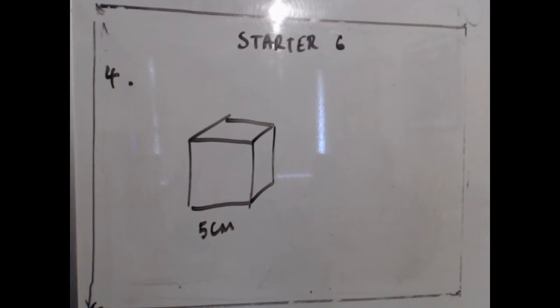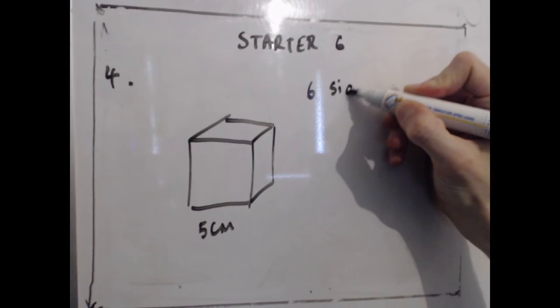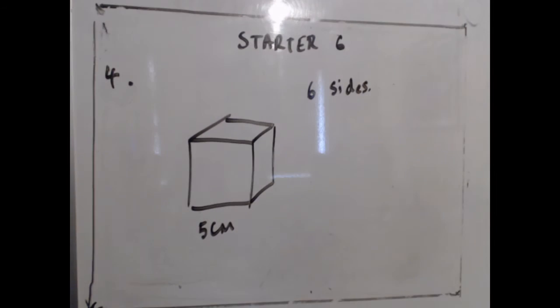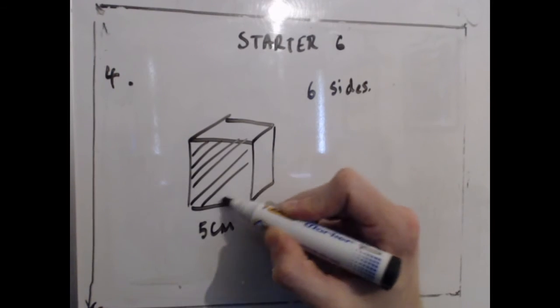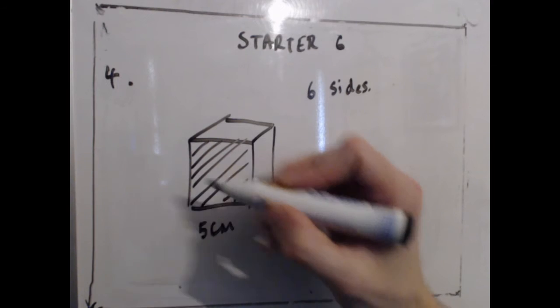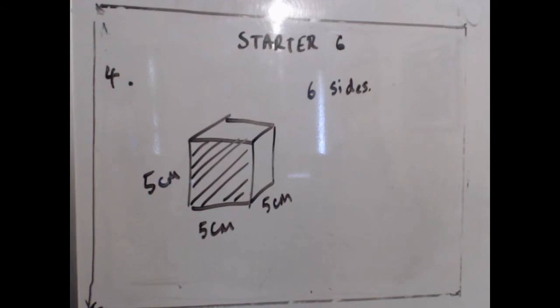Question 4 is a surface area question, not to be confused with the volume question. We're looking at a cube here, and a cube has 6 sides, and that's very important for this question. Now the surface area, the area of one of these surfaces, now as it's a cube I know that the front surface there is 5 by 5, and in fact all of the dimensions of this are 5, 5 cm by 5 cm by 5 cm.